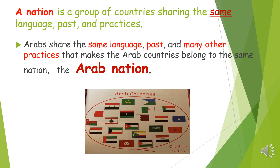A nation is a group of countries sharing the same language, past, and practices. As we have just learned, Arabs share the same language, the same past, and many other practices. These things make the Arab countries belong to one group, or one nation — which is the Arab nation. So all the Arab countries belong to the Arab nation.